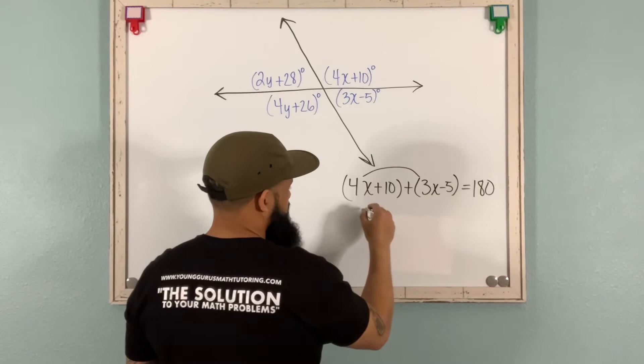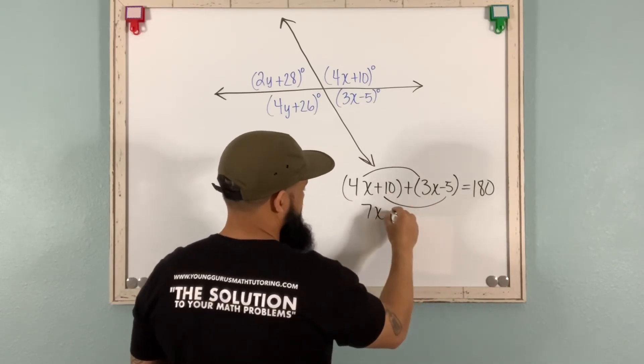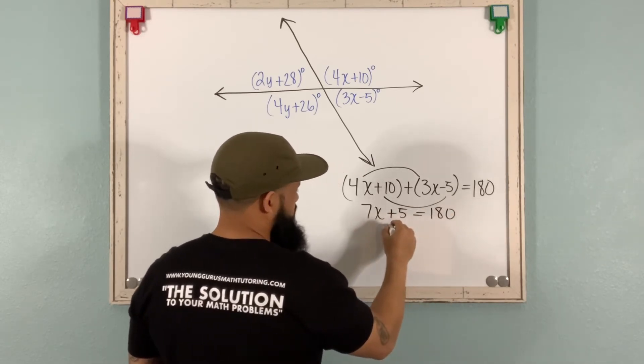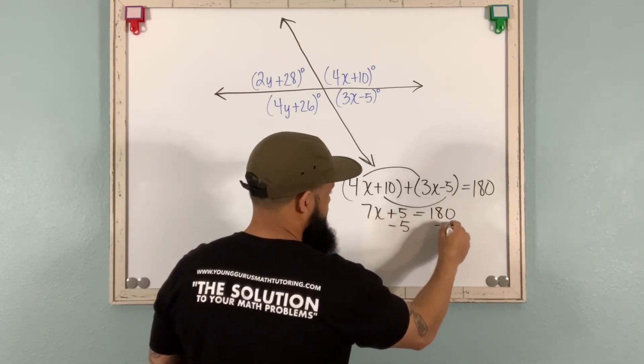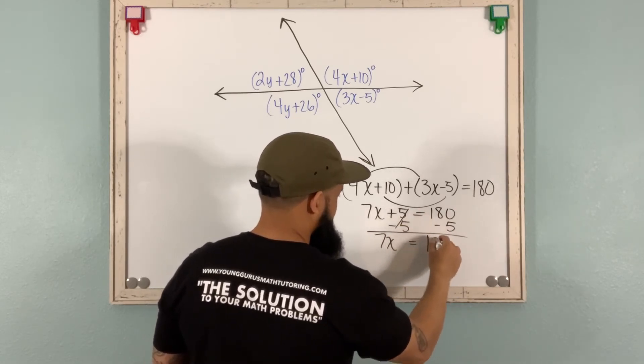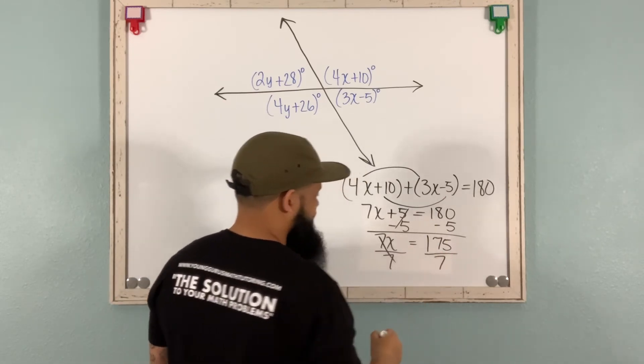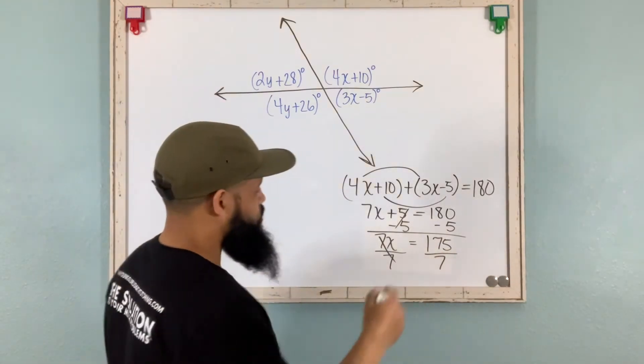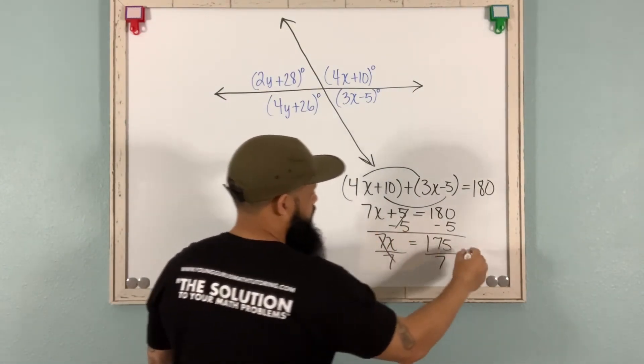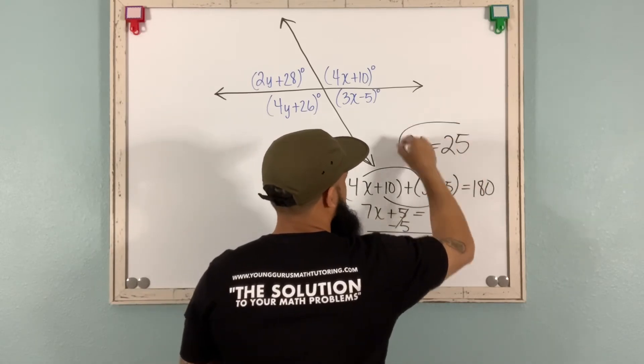All right? Combine like terms. 4x plus 3x is 7x. 10 plus negative 5 is 5. Subtract 5 from both sides. Boom. 7x equals 175. And then when we divide by 7, that's going to give us x equals 25. Yep. Let's put it right here. x equals 25. All right?